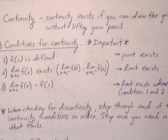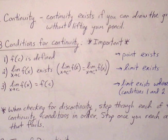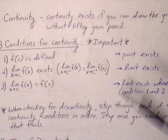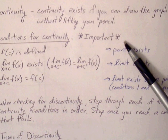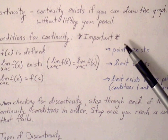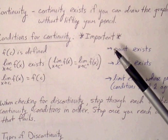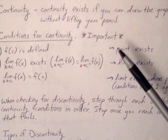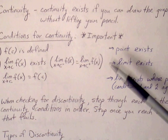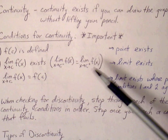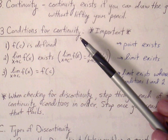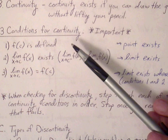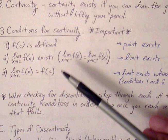This takes us to the next topic: continuity. Continuity exists basically if you can sketch the graph without lifting your pencil. We can visually tell whether a function is continuous just by seeing whether the graph is connected, but we need to show it using conditions that involve limits.